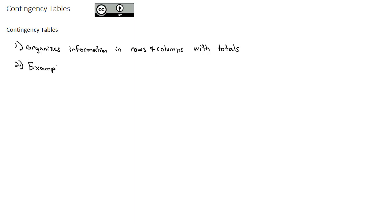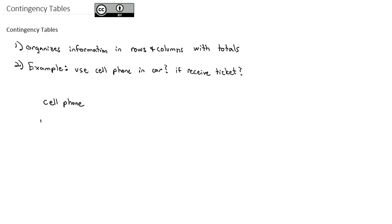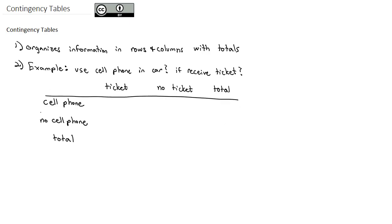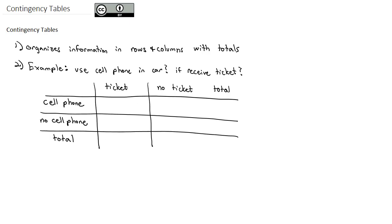For example, if we did a research study and asked a bunch of people if they used the cell phone in the car, and we asked people if they received a ticket in the past year, we can organize the information into a contingency table. We might have one row for cell phone users, one row for people who use no cell phone in the car, a column for people who got a ticket, and a column for people who got no ticket. We'll also have a column for the totals and a row for the totals, giving us a nice three by three grid to organize all the information.